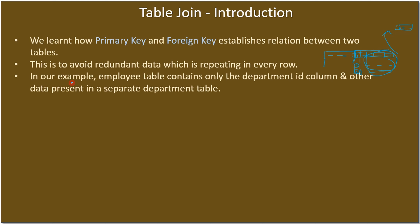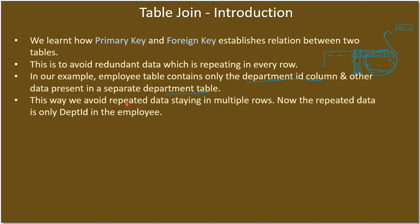In our example, the employee table contains only the department ID column, and the other data is present in a separate department table. This avoids redundancy, but the data is split into two tables and can be joined using the key column. This way we avoid repeated data staying in multiple rows. By splitting the table by means of primary and foreign key, we prevent data repetition.